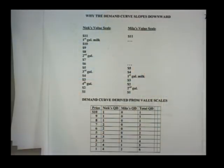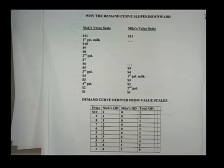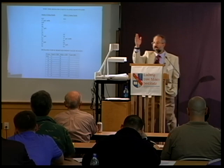If price falls even further to $4 per gallon, he'll buy three gallons. And at $2, he's willing to purchase four gallons because the fourth gallon has a higher marginal utility than $2. So as the price of hand calculators, when introduced by Texas Instruments in the late 60s, came down from $350, more and more people began buying them.